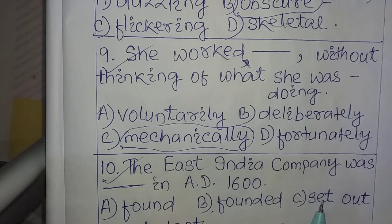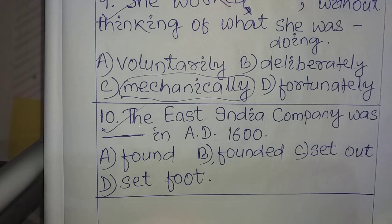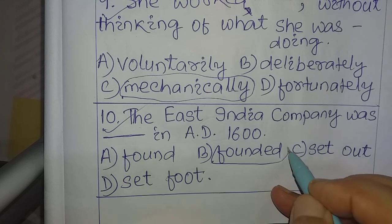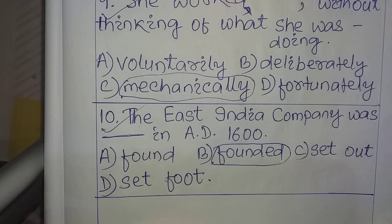Question number ten: 'The East India Company was ___ in A.D. 1600.' Options: A) found, B) founded, C) set out, D) set foot. The answer is 'founded'. 'Founded' is the past participle of 'found', meaning established. The East India Company was founded — that is, established — in A.D. 1600. Note that 'found' can also be the past tense of 'find', meaning to get or discover, which is a different word.